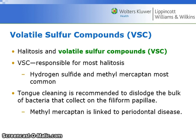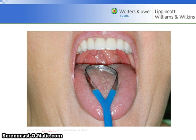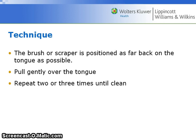Volatile sulfur compounds (VSC) are responsible for most halitosis; hydrogen sulfide and methylmercaptan are the most common. Tongue cleaning is recommended to dislodge the bulk of bacteria that collect on the filiform papilla, and methylmercaptan is linked to periodontal disease. The brush or scraper is positioned as far back on the tongue as possible and then pulled gently over the tongue, repeated two or three times until the tongue is clean.